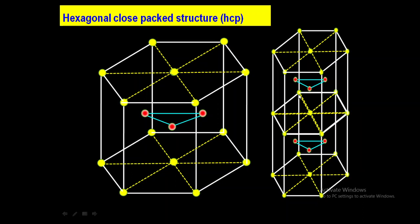In the vertical direction, neighboring atoms are present in the triangular layers at the top and at the bottom. Counting the nearest neighbors to the central atom: 1 through 6 in the hexagonal layer, 7, 8, 9 in the upper triangular layer, and 10, 11, 12 in the lower triangular layer. So the coordination number of this central atom with respect to the hexagonal and triangular layers is 12.